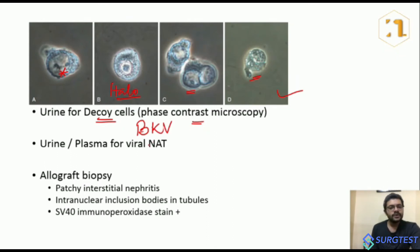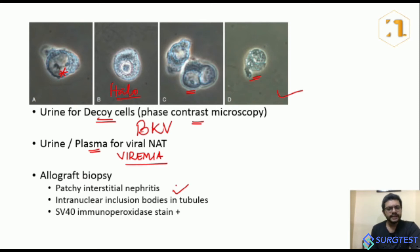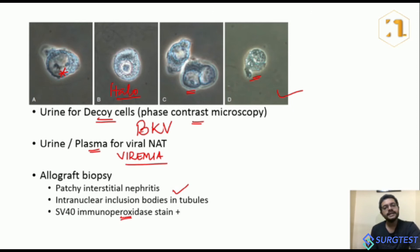After viruria, you can also check the plasma for BK virus nucleic acid material to assess viremia. If an allograft biopsy is done, findings include patchy interstitial nephritis and intranuclear inclusion bodies in the tubular epithelial cells. Earlier it was difficult to differentiate between acute rejection and BK virus nephropathy because both could occur simultaneously, but with the emergence of the SV40 immunoperoxidase stain, it is now easier to distinguish between the two.